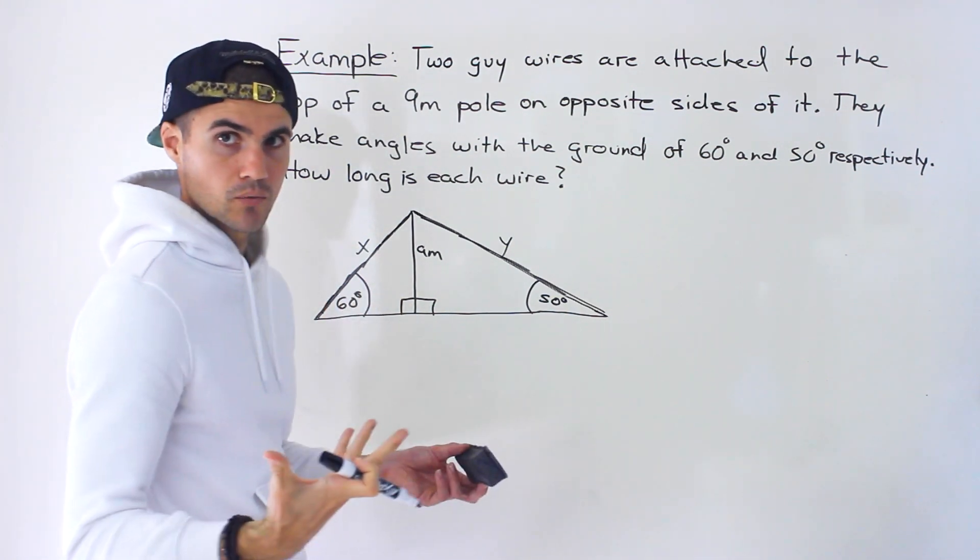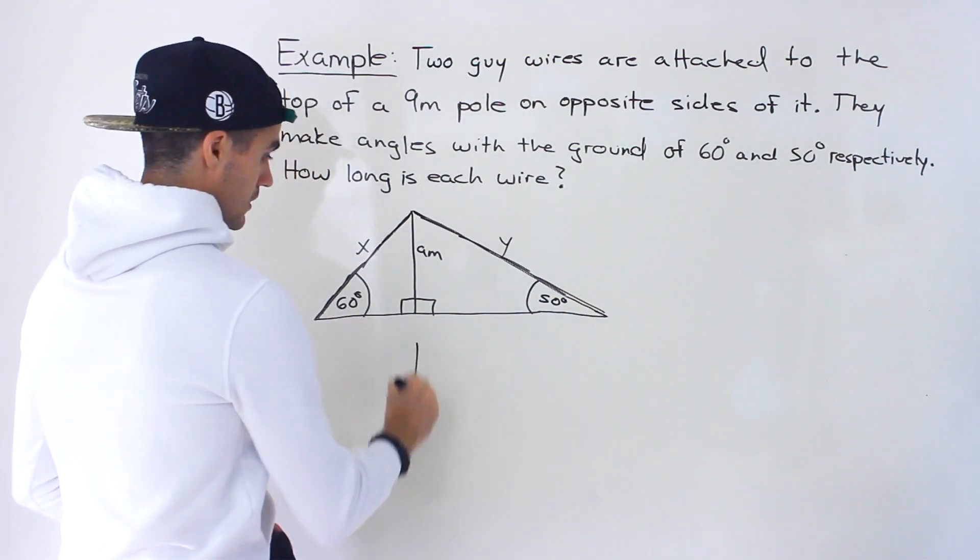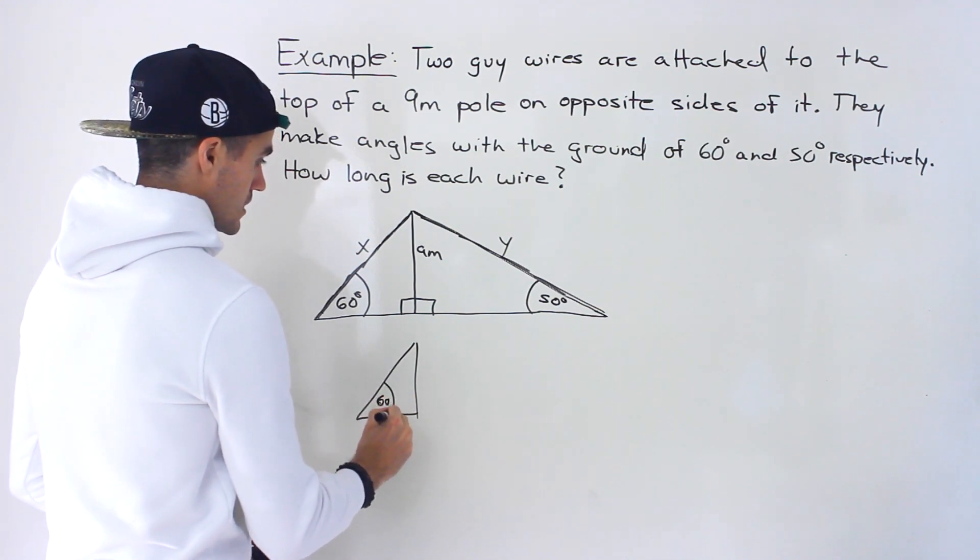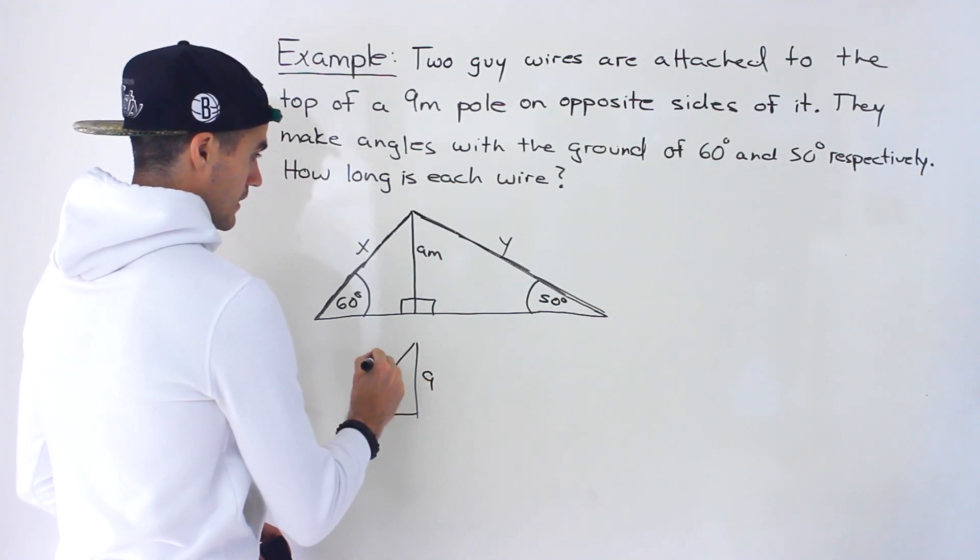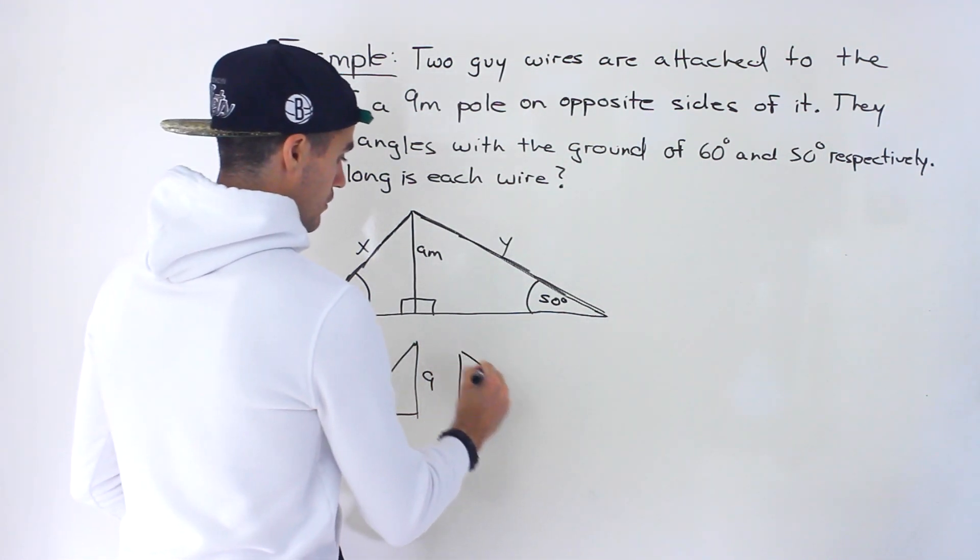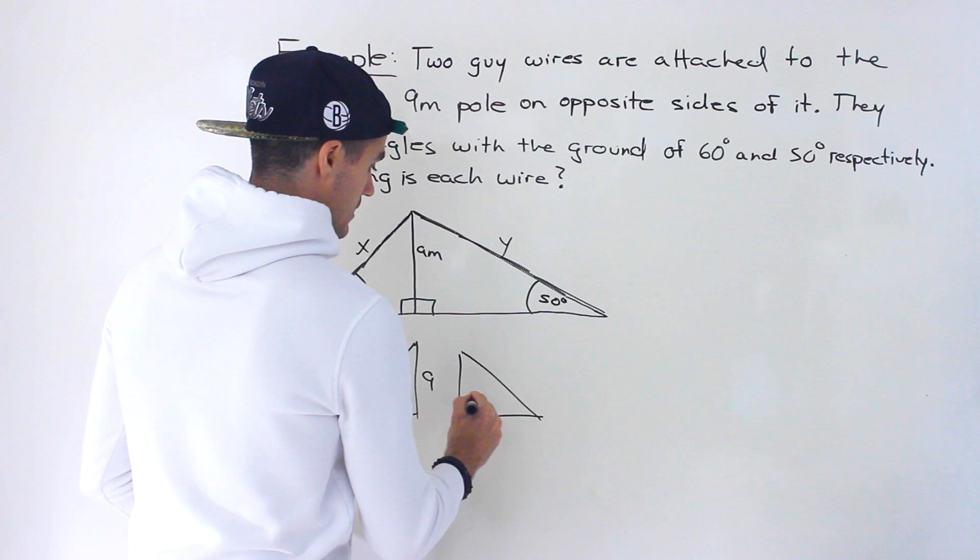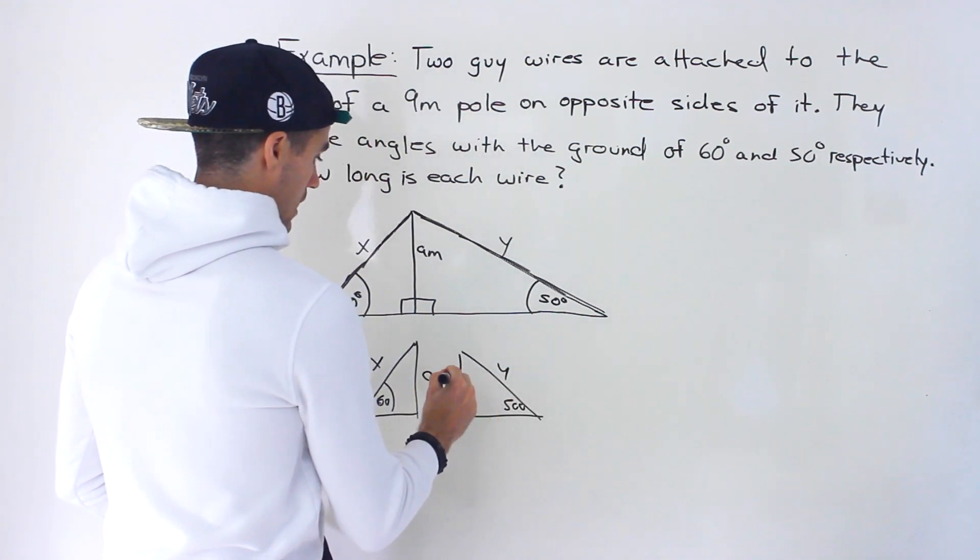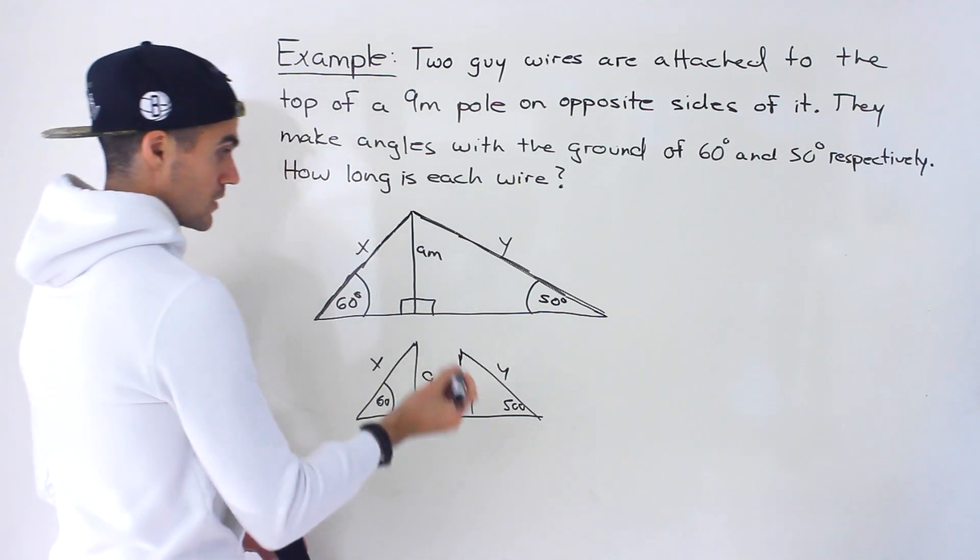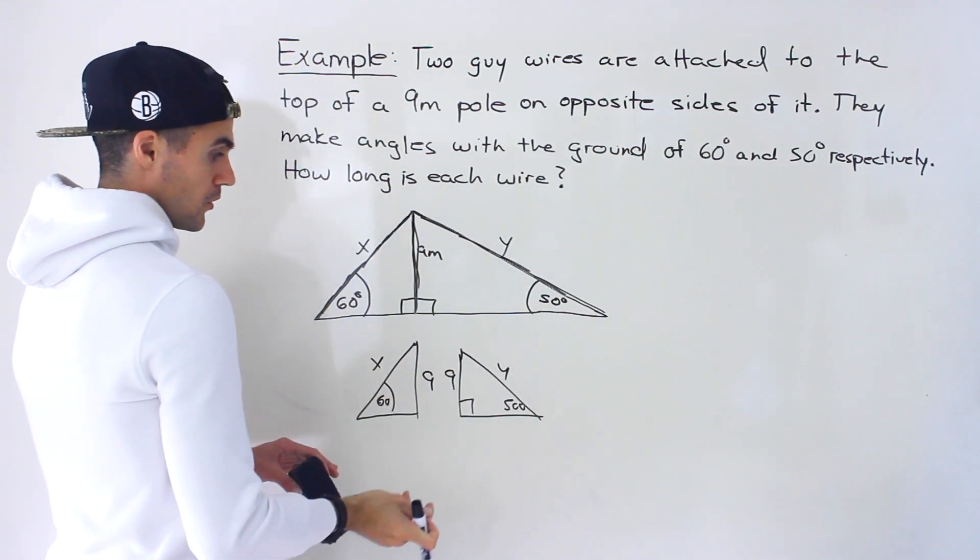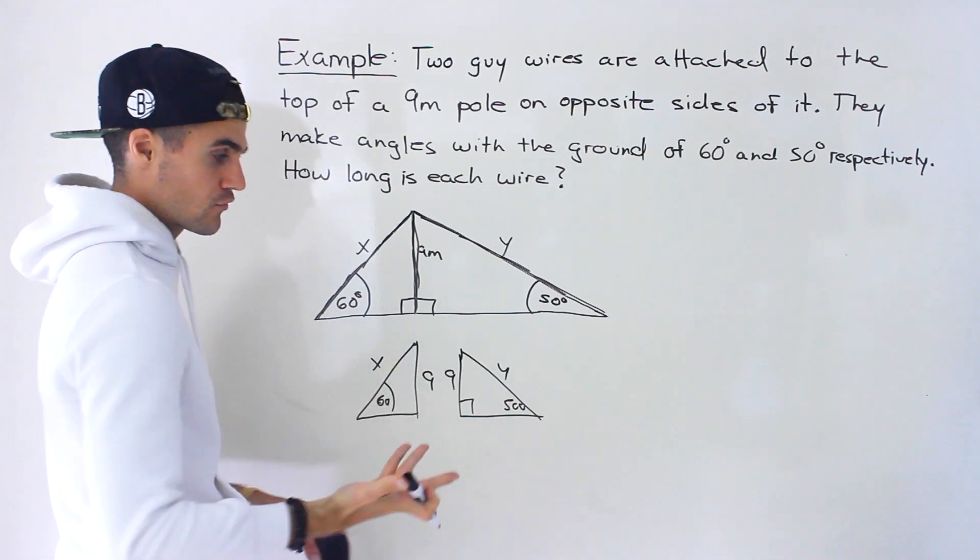And so notice we're actually just dealing with two separate triangles here. So if I draw this triangle, we got 60 degrees, we got nine, and then we have X like that. And then we're dealing with another triangle like this. We got Y. This is 50 degrees. And then this is nine as well, right? This side here, this pole is common for both triangles. And so we just have to solve for X and Y.